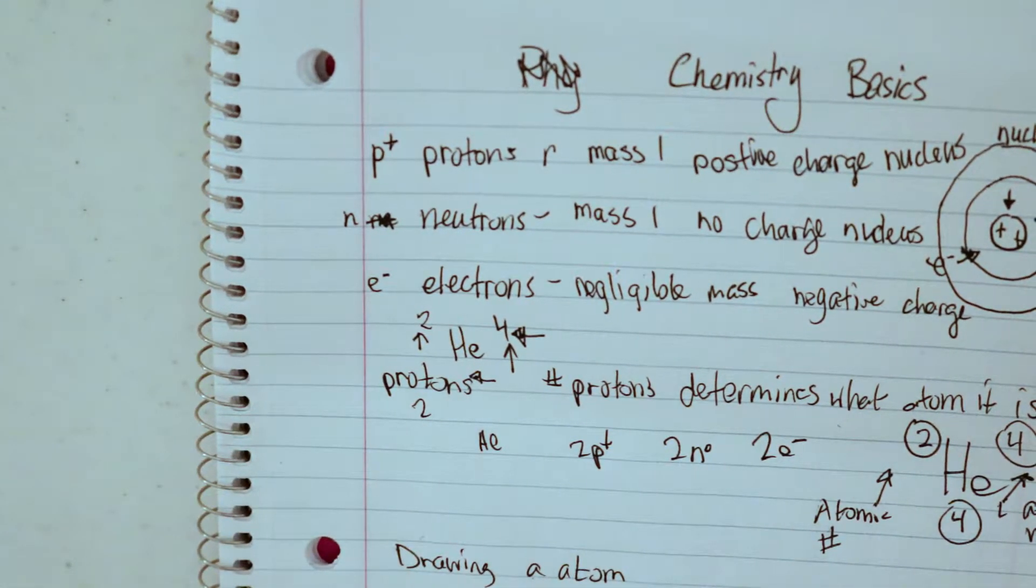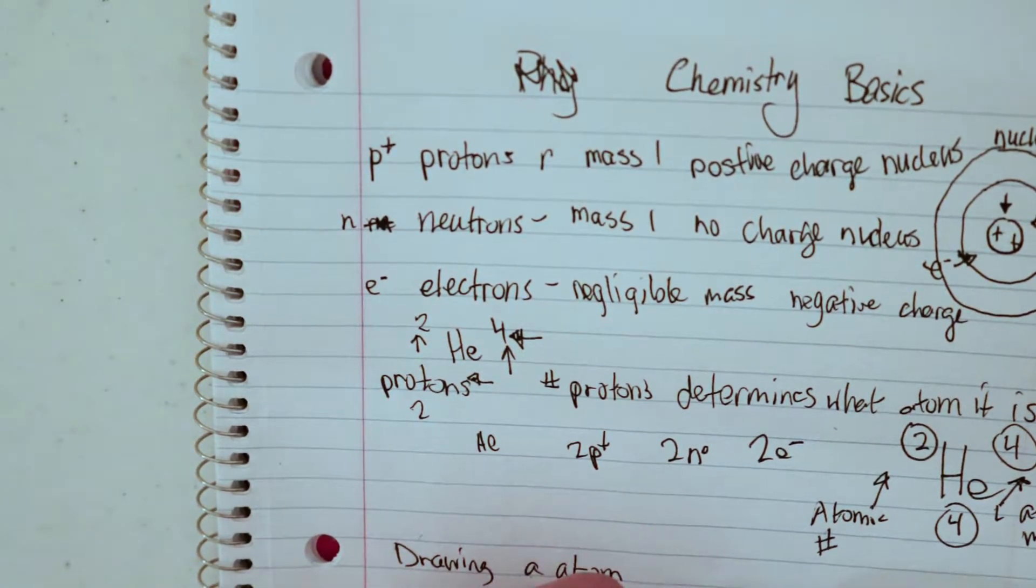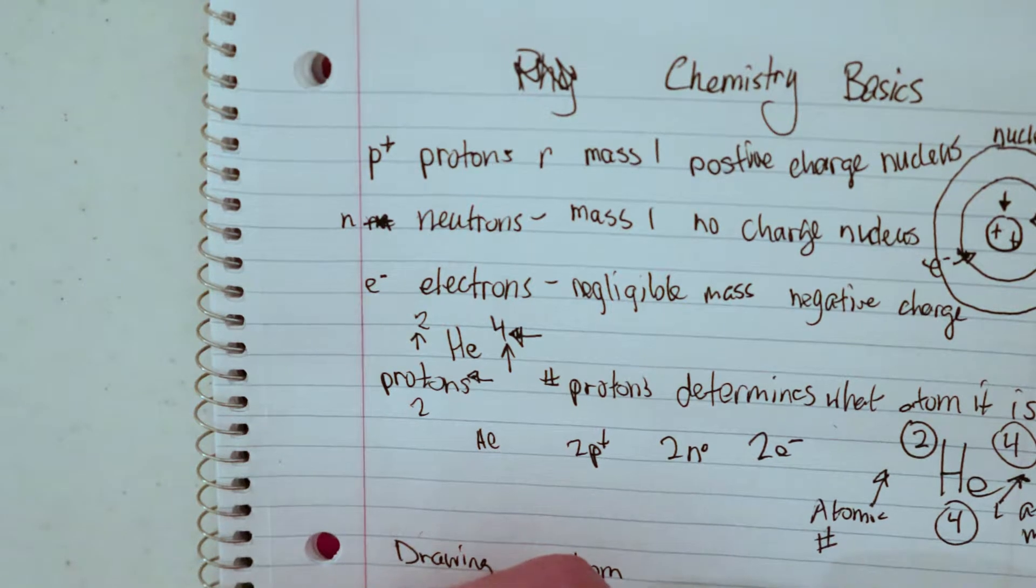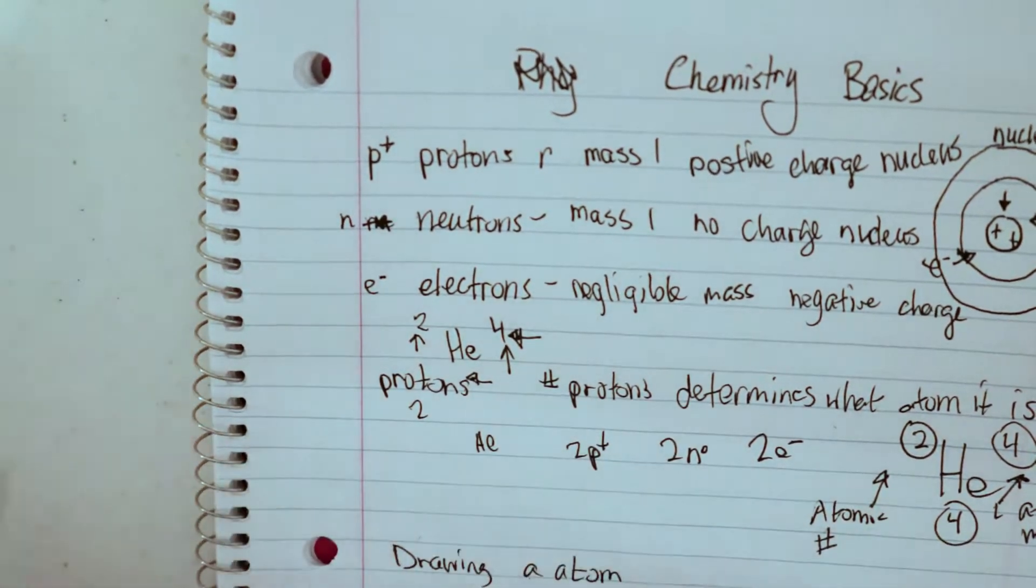And for sodium, it has the atomic number of 11 and the atomic mass of 23. So just round up.